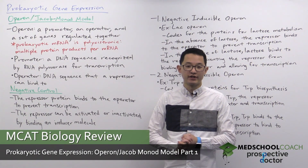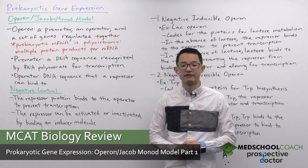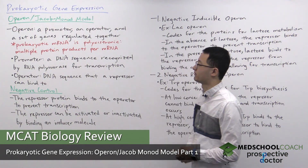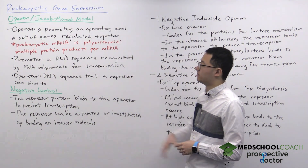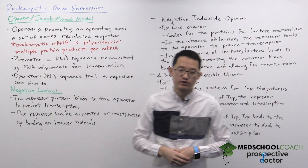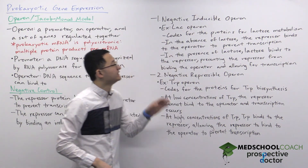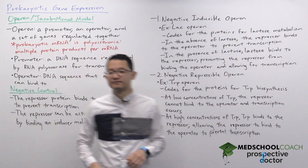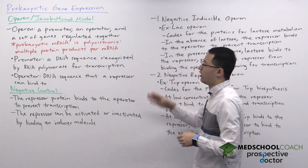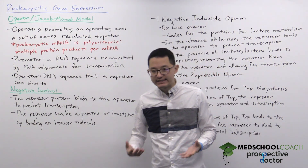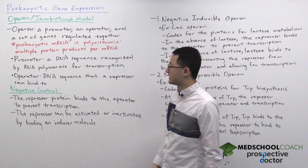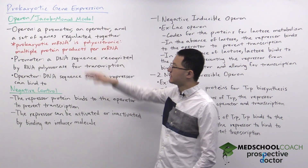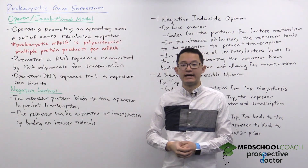In the next few videos we're going to go over prokaryotic gene expression. This video is going to talk about the operon from the Jacob Monod model as well as negative control of operons. An operon is a DNA sequence that includes a promoter, an operator, and a set of genes that are regulated together.